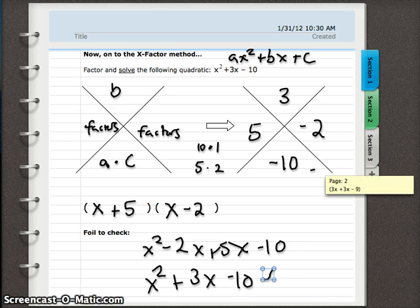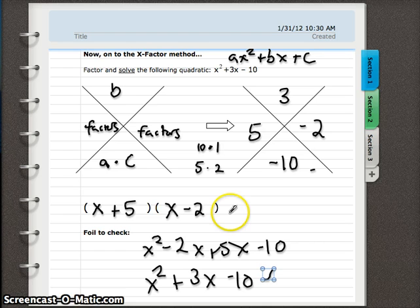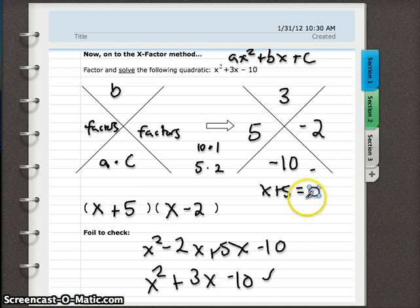So we're almost done. We haven't solved for x yet. We need to take these sets of parentheses and do something to them. We need to set each of them equal to 0 and solve for x. So x plus 5 is our first set. Set it equal to 0 and solve for x. We can solve for x by subtracting 5 from both sides and then we get x is negative 5.